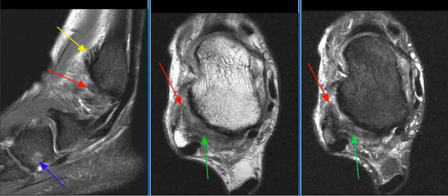In acute complete tears, a full-thickness ligament tear or absence of the ligament is seen, with possible capsular rupture and extravasation of joint fluid into the anterolateral soft tissues.